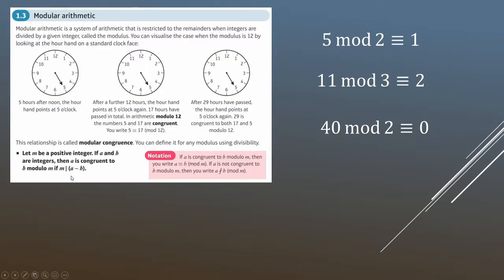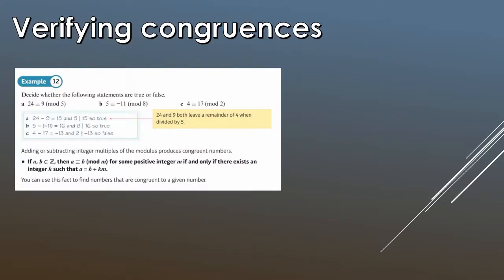Verifying congruence: m must divide the difference of a minus b. For example, to verify whether 24 is congruent to 9 mod 5, you take the difference: 24 minus 9 equals 15. Then check whether the mod number — here 5 — divides that difference. Since 5 does divide 15, this congruence is true.